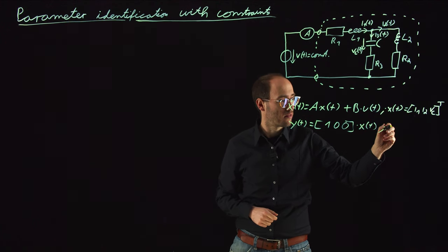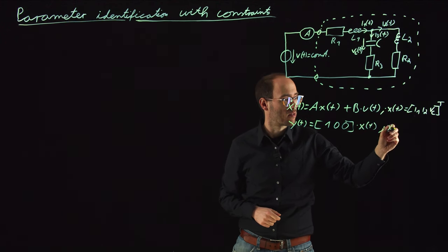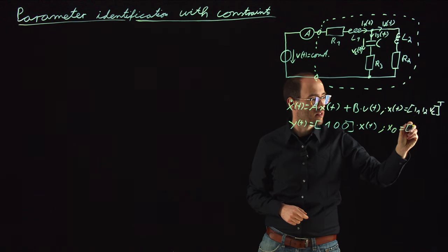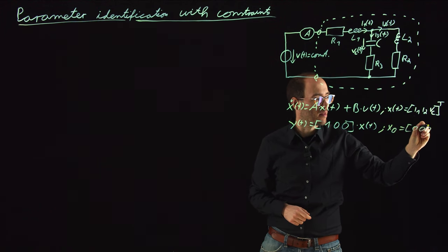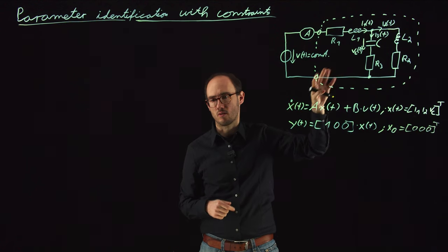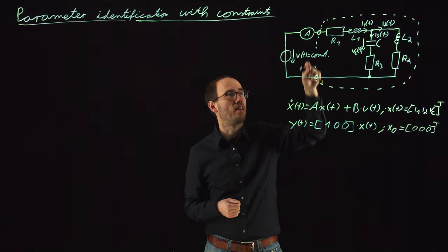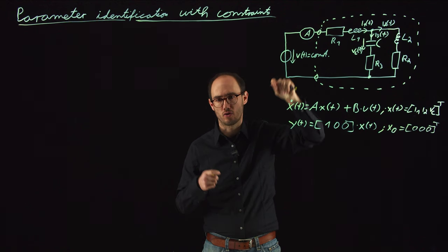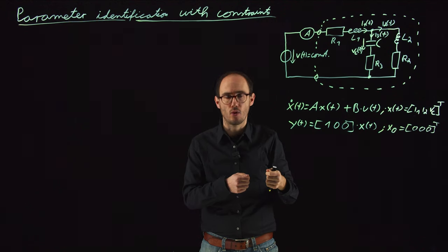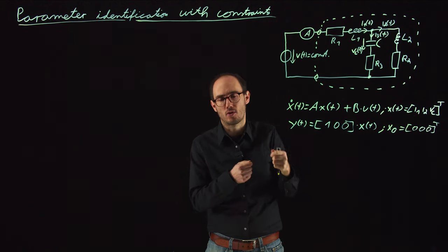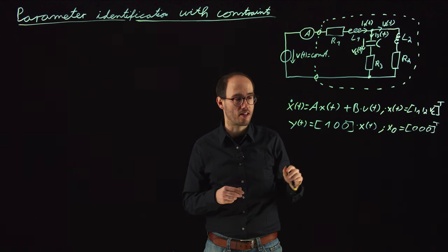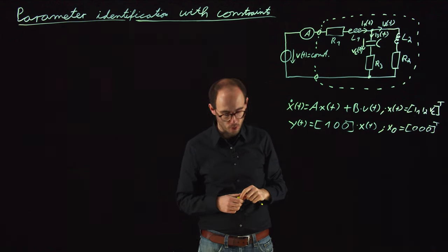For simplicity, we assume the initial state x0 is the zero vector — the circuit is not energized at the beginning. Then we connect the circuit to the constant voltage source and observe how the circuit responds over time.